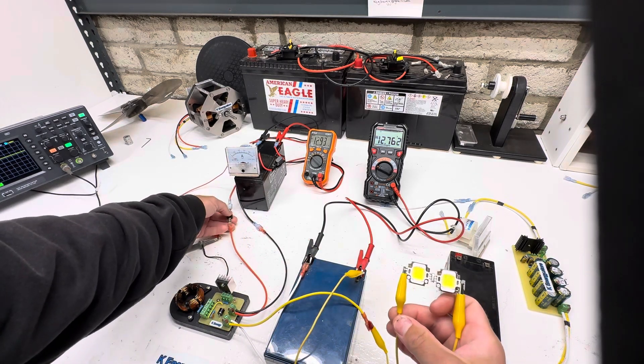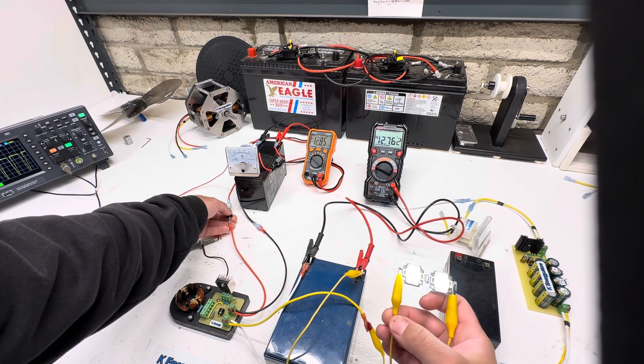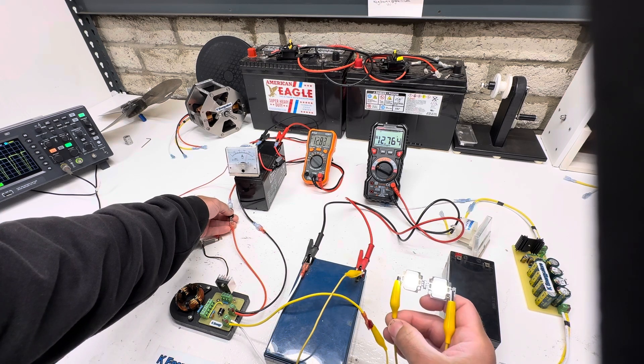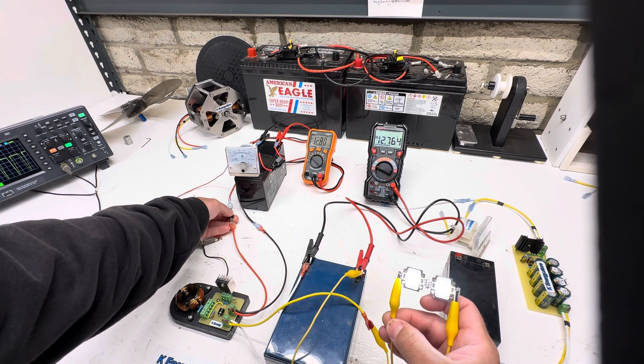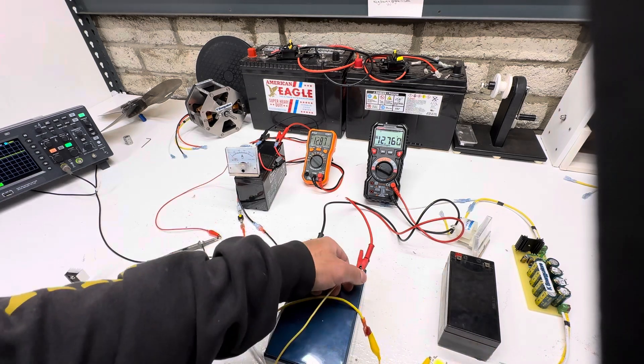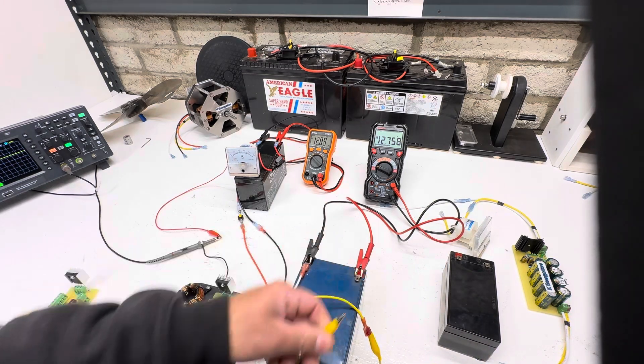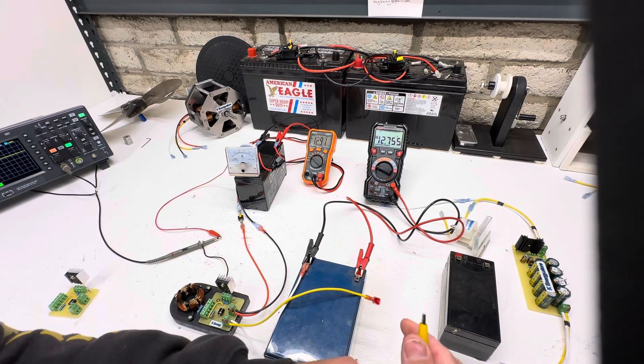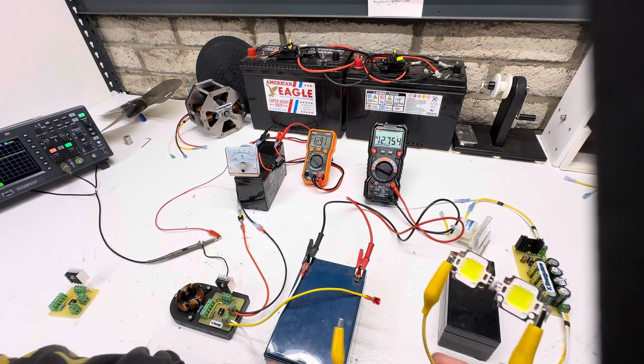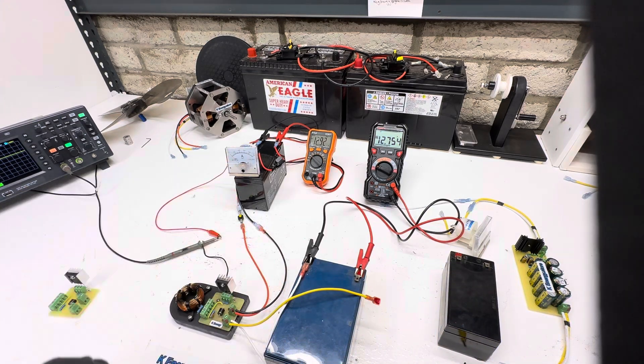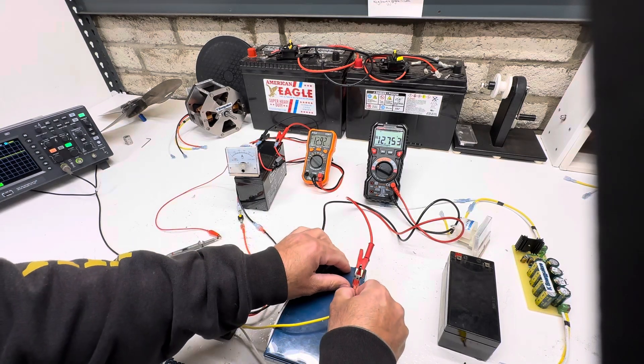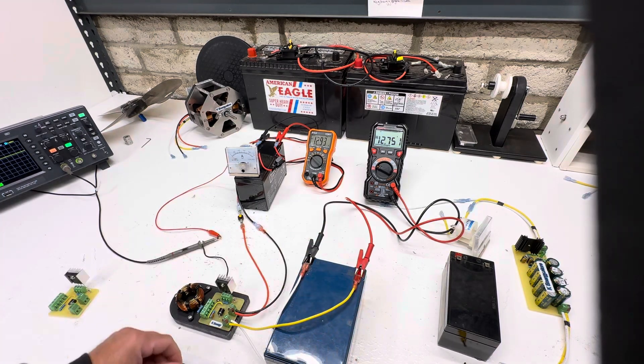To give you an idea what's going to the battery, these are like blinding bright. So even when it seems like it's not charging very much, it still has a lot of energy. Those are two 10 watts and we're using right around six watts to do this, so it's pretty neat.